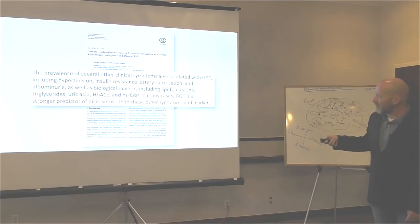GGT is a stronger predictor of disease risk than, have you guys heard of these ones? Lipid, creatine, triglycerides, uric acid, A1C, and CRP. What does that say? That must have been a typo. GGT is a stronger predictor of disease risk than any of these symptoms in these markers. Stronger than CRP? You guys follow that? Why is GGT not on all labs, man?